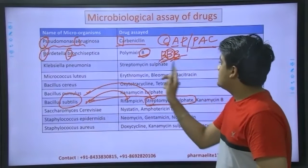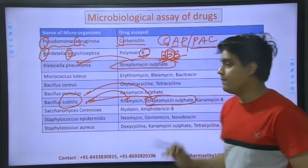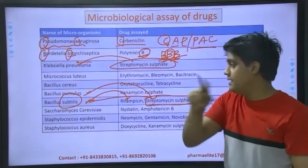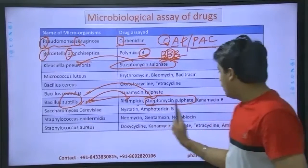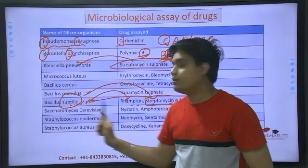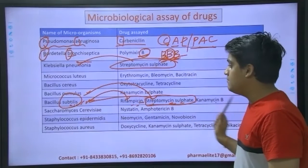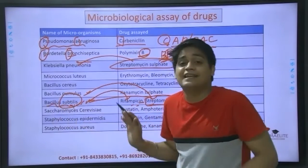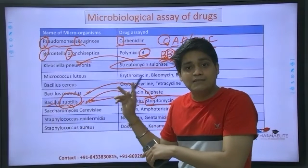Going further, if it's a common drug, put both the microbes together. And if it's a common microbe, put all those drugs which are being analyzed by that same microbe together. So rifamycin, or streptomycin sulfate, or kanamycin - do that to simplify complex things.